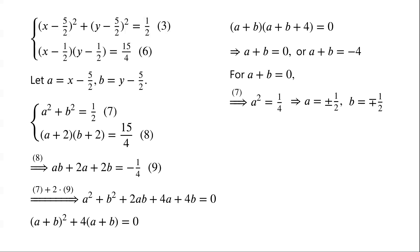Note that A = X − 5/2 and B = Y − 5/2, so X = A + 5/2 and Y = B + 5/2. Therefore (X, Y) = (3, 2) or (2, 3).